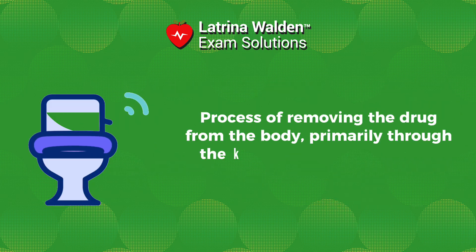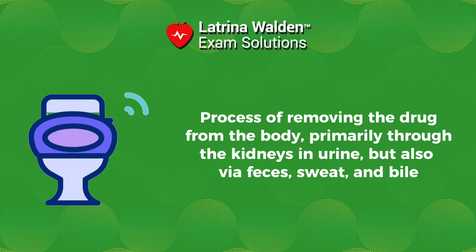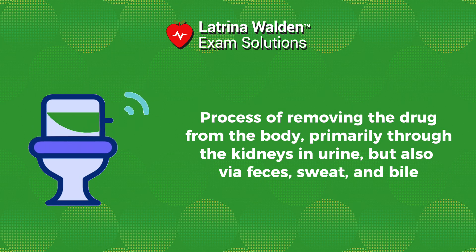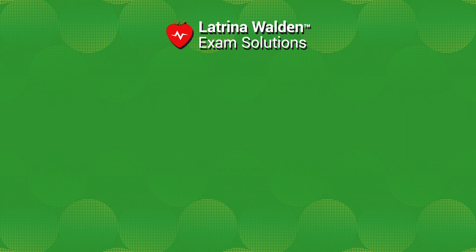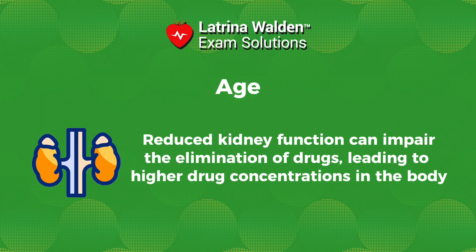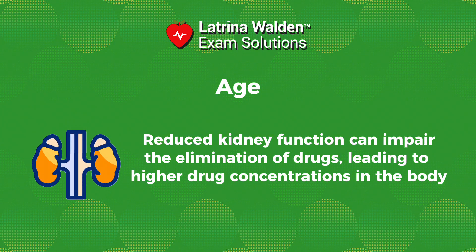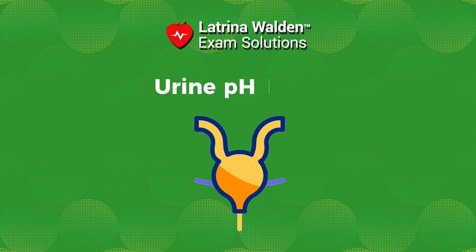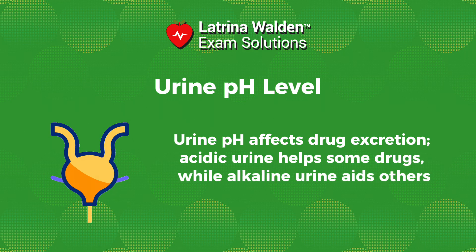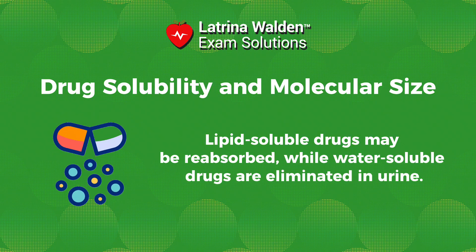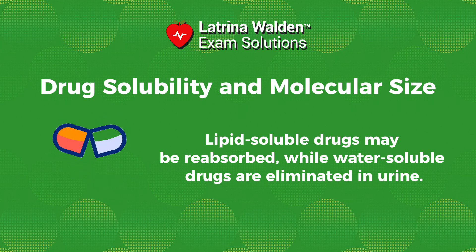Excretion is the process of removing the drug from the body, primarily through the kidneys in urine, but also via feces, sweat, and bile. Factors affecting drug excretion include reduced kidney function, which can impair drug elimination, leading to higher concentrations and increased risk of toxicity. Urine pH affects excretion — acidic urine helps some drugs, while alkaline urine aids others, and adjusting pH can boost elimination. Drug solubility and size also matter: lipid-soluble drugs may be reabsorbed, while water-soluble drugs are eliminated in urine, and smaller molecules pass through the kidneys more easily.